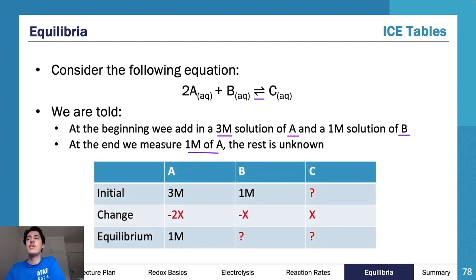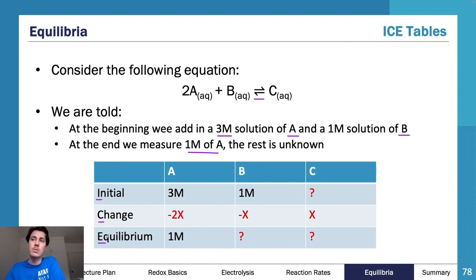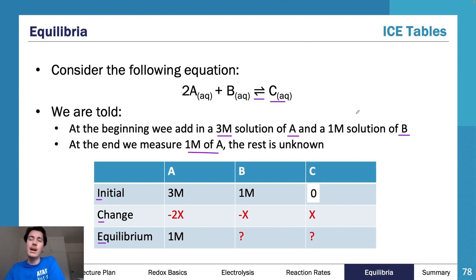This is what my ICE table should look like — Initial, Change, Equilibrium. Starting to fill it out: initially I didn't add any C, so I assume zero. I know I had a two-mole decrease in A because I went from three to one.